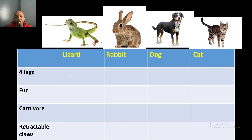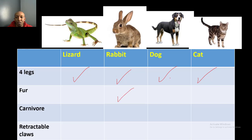Four legs: do lizards have four legs? Yes. Rabbits? Yes. Dogs? Yes. Cats? Yes. So all four of them have four legs. Now let's look at fur: do lizards have fur? No. Do rabbits have fur? Yes. Dogs? Yes. Cats? Yes.